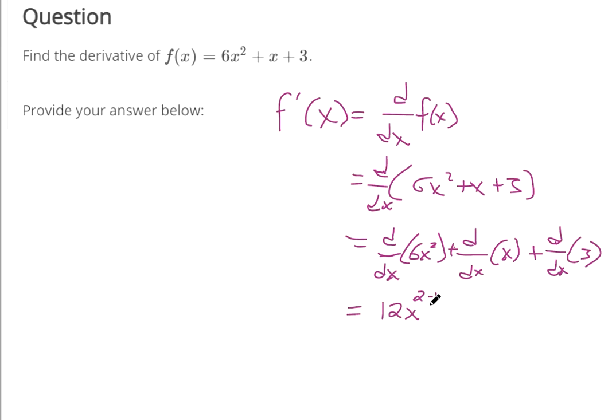So it's going to be 12x to the first. And there, we found that derivative. This one has a power of 1, so make that 1 come down and multiply to the front, and then reduce it by 1. That's the power rule.